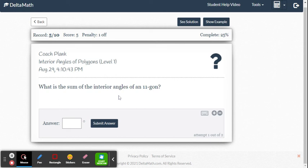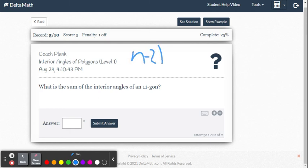What's the sum of the interior angles of an 11-gon? So this is just the formula, n minus 2 times 180. We just want the sum of all the angles, of all 11 interior angles. So n is the number of sides or the number of angles that the polygon has.